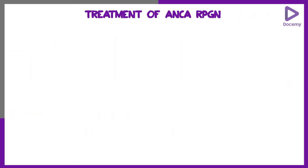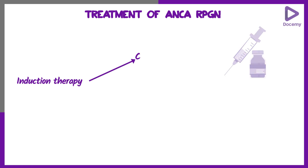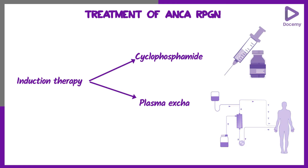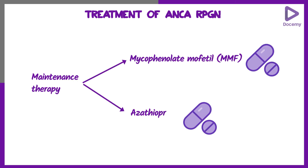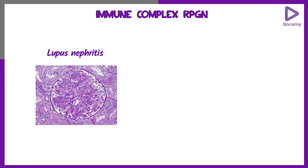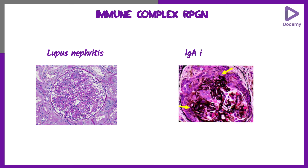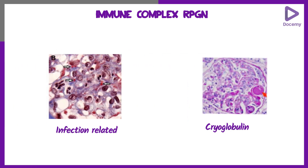Treatment of ANCA-associated RPGN includes cyclophosphamide or plasma exchange as induction therapy. For immune complex RPGN, causes include lupus nephritis, IgA nephropathy, infection-related glomerulonephritis, and cryoglobulin vasculitis — all of these can produce immune complex RPGN.